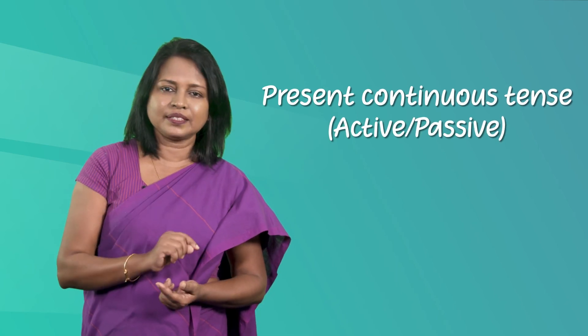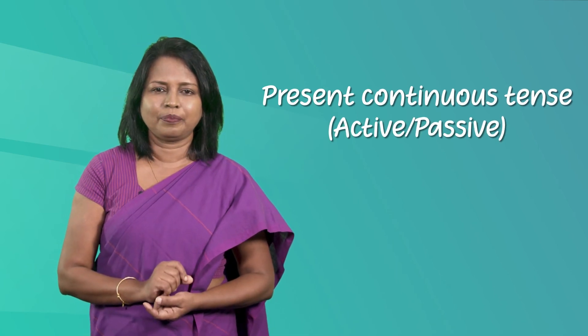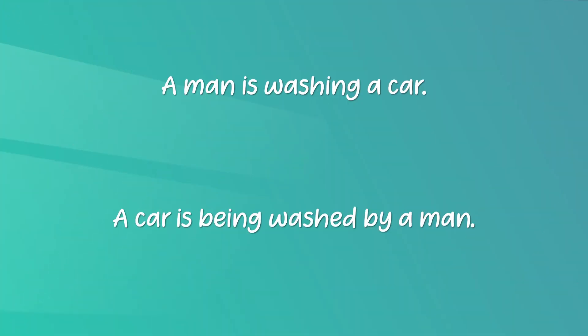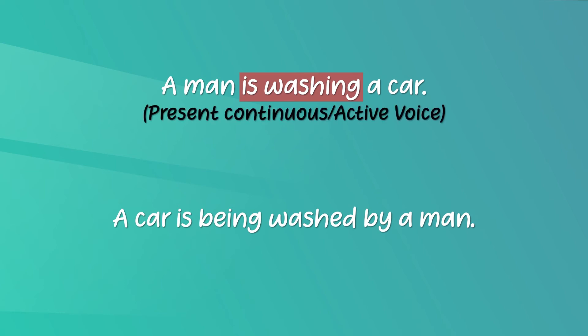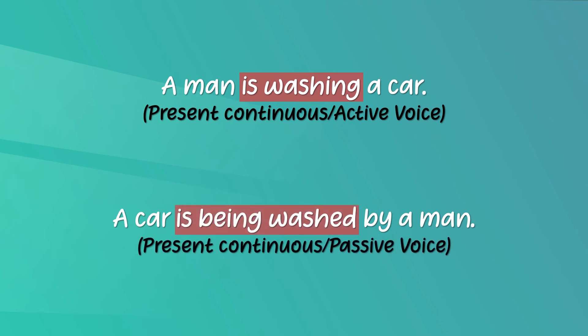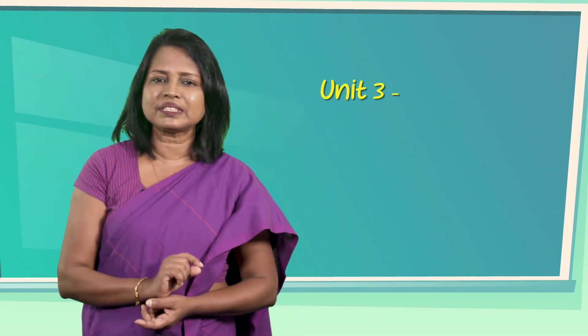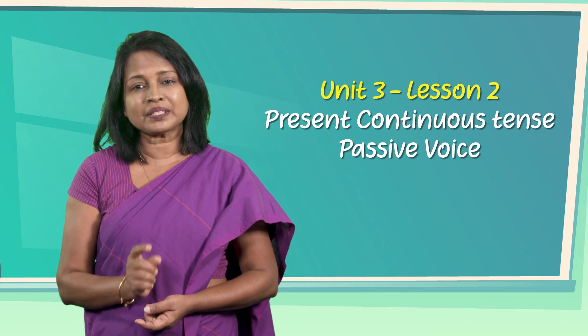Now let's move on to the third step. In this step we will write what is happening in the picture. To do that, you can make use of the present continuous tense in active voice or passive voice appropriately. Look at the two examples: 'A man is washing a car' — that is present continuous active voice. 'A car is being washed by a man' — that is present continuous passive voice. If you need more help, you can revisit our previous lesson on present continuous tense and passive voice once again.